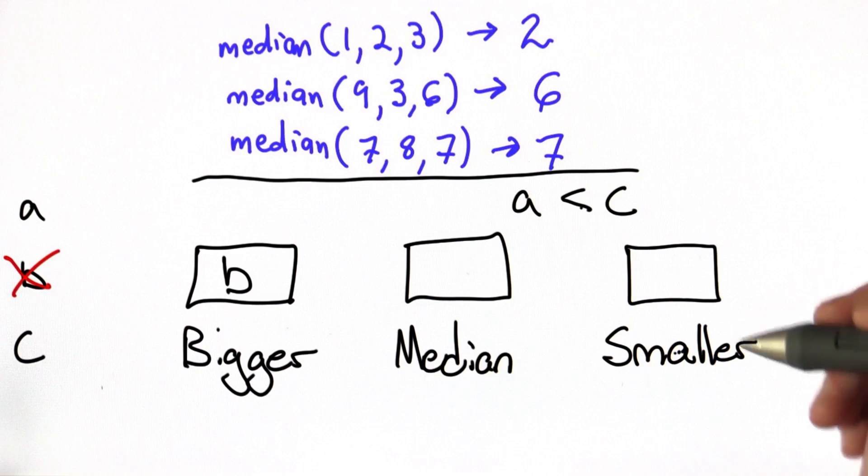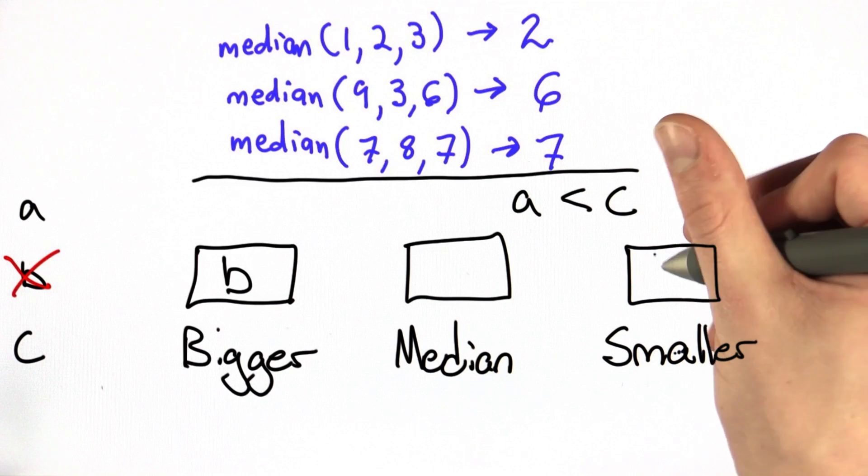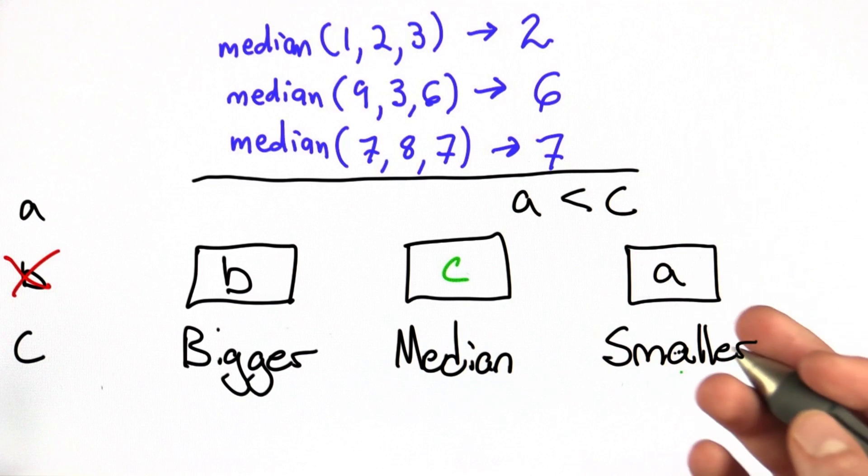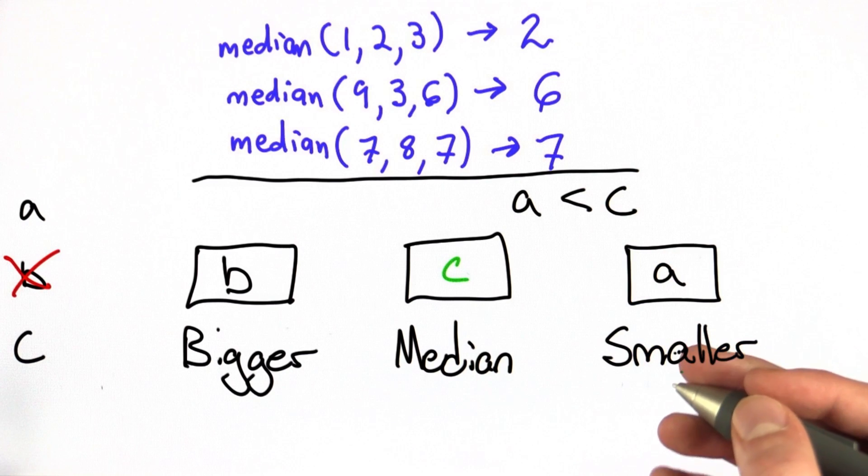If C is greater than A, we know that A is the smaller number, and C is the median. We can use this strategy to solve every possible case when defining our function.